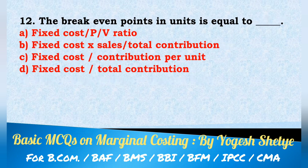Question 12: The break-even point in units is equal to — fixed cost divided by P-V ratio; fixed cost into sales divided by total contribution; fixed cost divided by contribution per unit; fixed cost divided by total contribution. Answer: break-even point in units is equal to fixed cost divided by contribution per unit. Answer C.